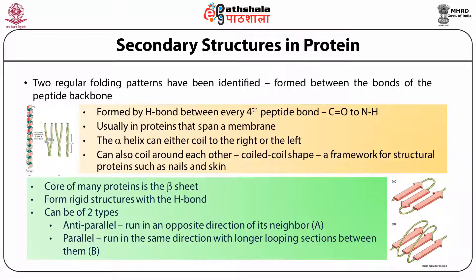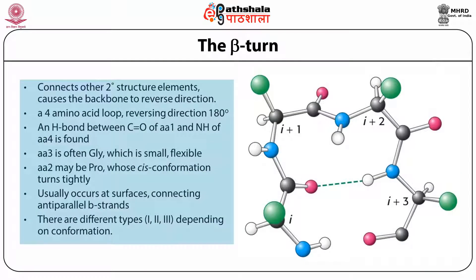The beta turn is a hydrogen bond formed between the first and i+3 amino acid residues, connecting two other secondary structure elements and causing the backbone to reverse direction 180 degrees in a four-amino-acid loop. The hydrogen bond forms between the C=O of the first amino acid and the N-H of the fourth. Amino acid three is often glycine, which is small and flexible, while amino acid two is often proline. There are different types: type 1, type 2, and type 3.